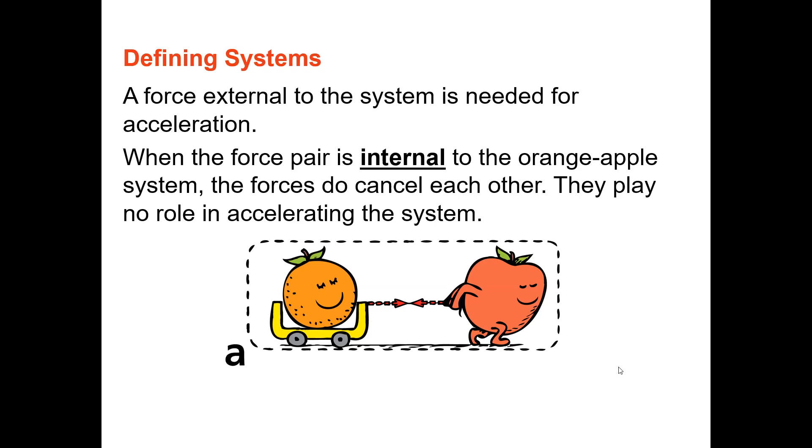So here we have the action force and the reaction force, and they're both inside or internal to the system. These two forces do in fact cancel out. Now wait a minute, it's the same setup. It's the same apple, it's the same orange, it's the same rope, it's the same pull. How can you say that in one case the action and reaction don't cancel, and in the other case they do cancel?